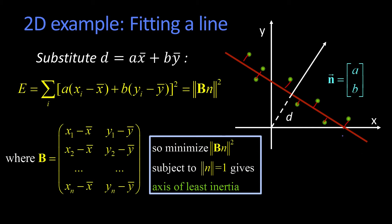Remind you from your physics, if I've got an axis, then the inertia of the whole thing is proportional to the sum of all the points, the square distance of those points to the axis. So the line fitting here in 2D is an axis of least inertia.